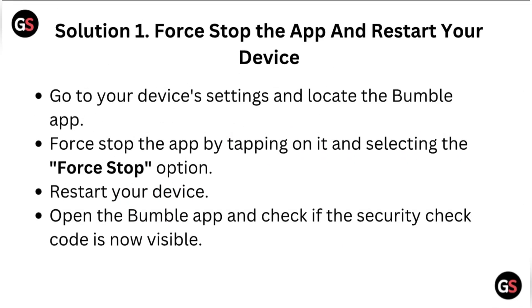Solution 1: Force stop the app and restart your device. Go to your device settings and locate the Bumble app. Force stop the app by tapping on it and selecting the force stop option. Restart your device, open the Bumble app, and check if the security check code is now visible.